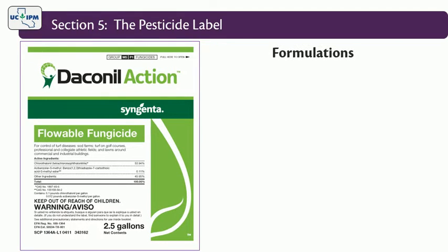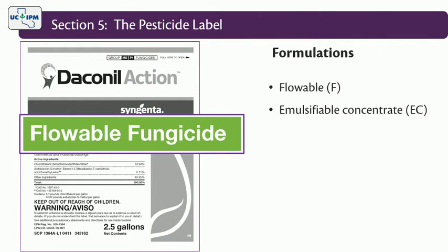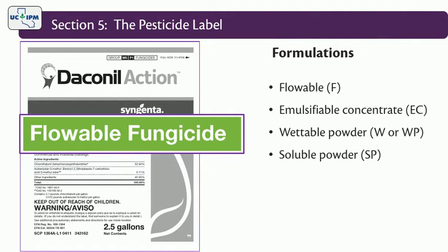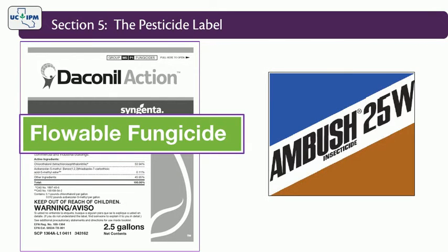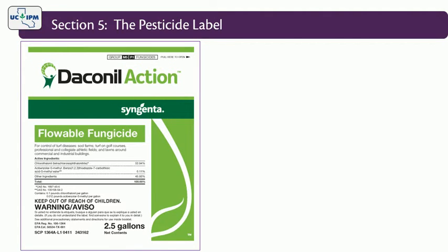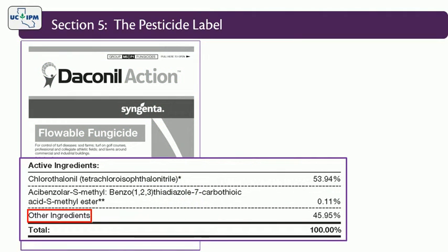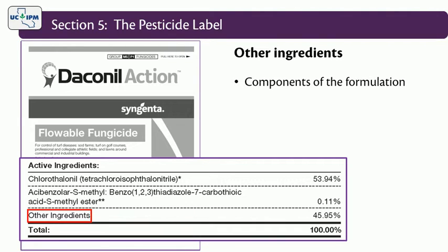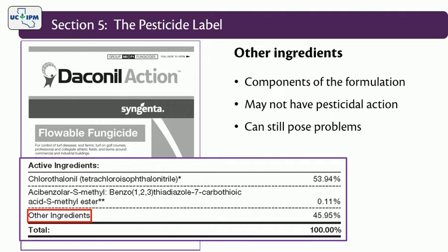Labels usually list the formulation type, such as flowable, emulsifiable concentrate, wettable powder, or soluble powder. This information may be included in the brand name — for example, after the trade name you may see a W to indicate a wettable powder formulation, or EC to indicate an emulsifiable concentrate formulation. Be aware that there may be different regulations for different formulations. Pesticide labels list the percentage of active and other ingredients by weight. So-called other ingredients are all components of the formulation, like a solvent or an adjuvant, that do not necessarily have pesticidal action but may still pose safety or environmental problems and form residues. Manufacturers do not usually identify individually the names or percentages of other ingredients in the product.